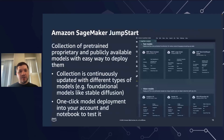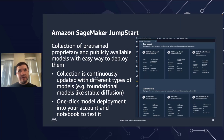Next is SageMaker JumpStart — effectively a collection of pre-trained proprietary and publicly available models with an easy way to deploy them. This collection is continuously updated; for example, it now has foundational models like Stable Diffusion. It has a simple one-click model deployment, meaning you can easily deploy this model into your account and get a Jupyter notebook to test the integration.